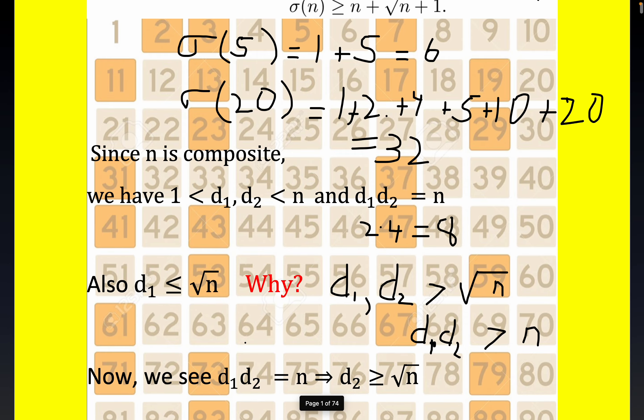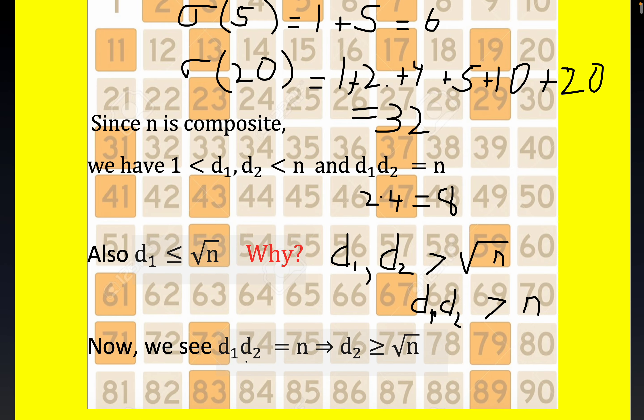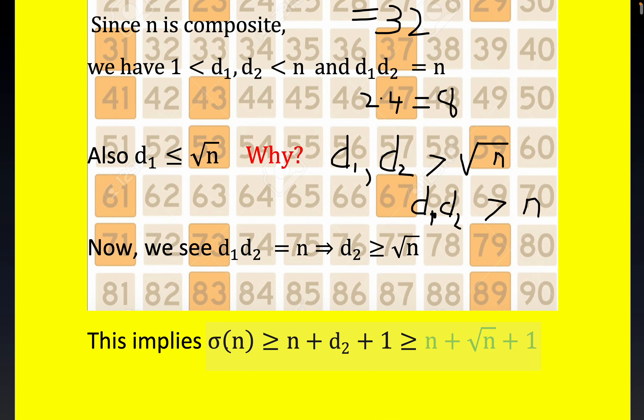So from that observation, or from that just brief little limit, we can see that d1 times d2 is equal to n implies that d2 is greater than or equal to square root n. And that's got to be true. If d1 is less than or equal to root n, d2 has no choice but to be strictly greater than or equal to root n. And so that kind of takes care of business as far as the problem goes, and we see that sigma n is greater than or equal to d2, which we know has to be greater than or equal to root n. And so this inference leads to the result we're looking for.